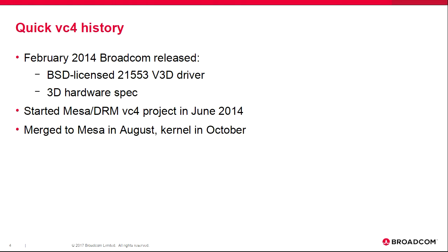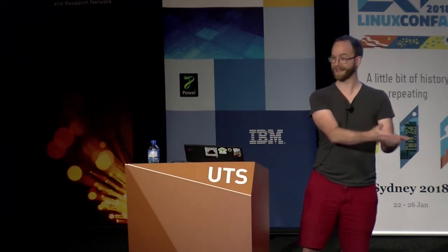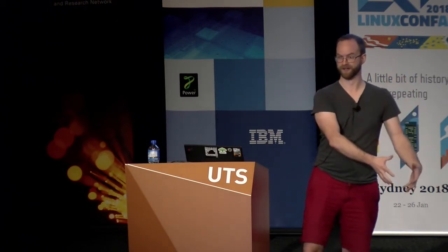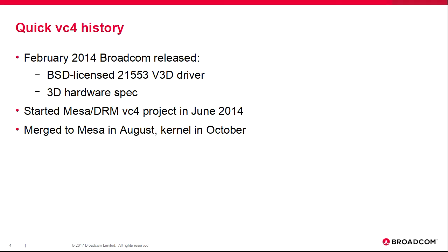History of VC4 graphics in Linux: Raspberry Pi uses the VC4 in all versions and had a closed source graphics stack. User space on the Linux side would package up OpenGL commands and hand them to the VPU, where a closed source OpenGL driver ran and talked to the 3D and display components. In February 2014, Broadcom threw over the wall a BSD-licensed OpenGL ES driver for another SoC with basically the same 3D chip, along with a 3D hardware spec.